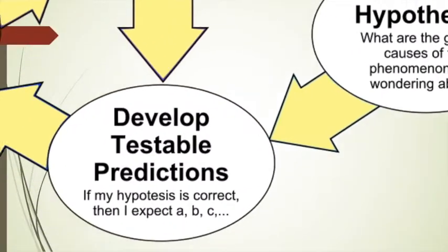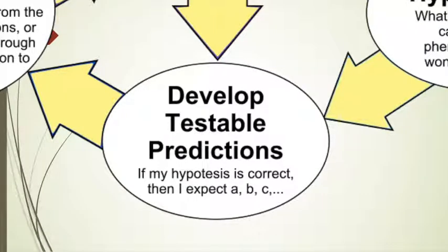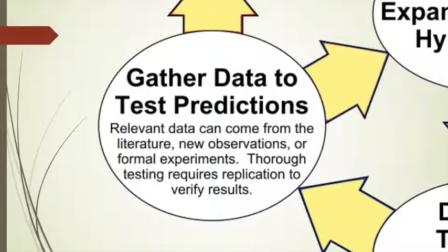After the hypothesis, we move on to develop testable predictions. If my hypothesis is correct, then I expect this and that and that other thing. We are trying to predict the explanation of the phenomenon that we just observed, and that's what we call the experiment phase of the scientific method. The results of that experiment are the data, and that data we need to gather in order to make our own conclusions. Relevant data can come from literature, new observations, or formal experiments.